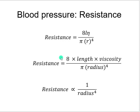Under normal conditions, length is constant, viscosity is constant, and 8 is a constant. So we change the equal sign to a proportional sign. That's how we've addressed the numerator. Length and viscosity can contribute to peripheral resistance — in pathology they can increase resistance — but in normal physiology we don't actively manipulate them. Below in the denominator, pi is a constant, so we drop it. What remains is radius.